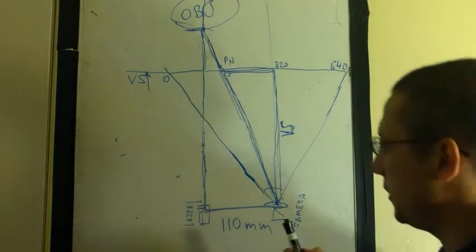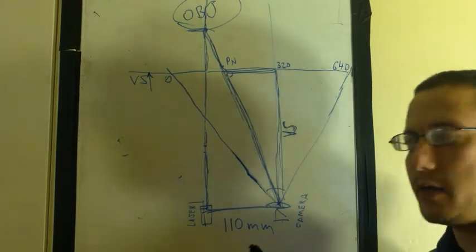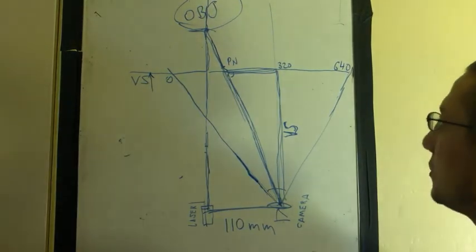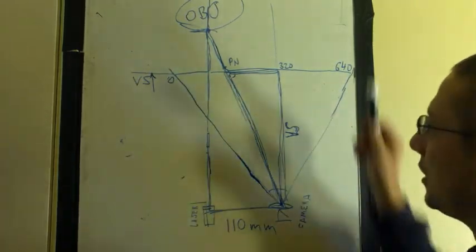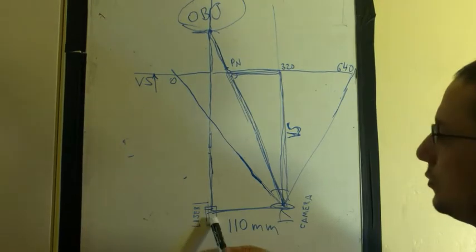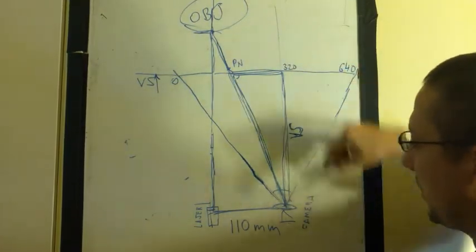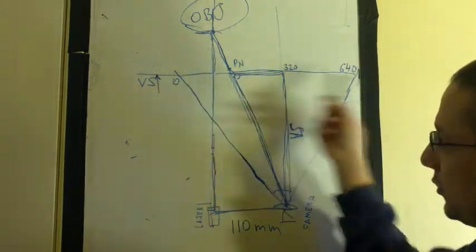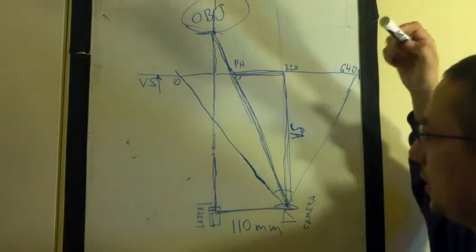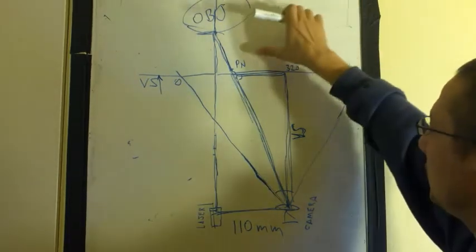In my LiDAR, the distance between camera and laser is 110 mm, but it can be anything you choose. Again, we have our virtual screen and we have an object to which we want to find the distance. So the laser shoots the beam which is reflected and comes back. On the virtual screen or on the CCD chip, it lights up as the pixel PN, or let's call it P.